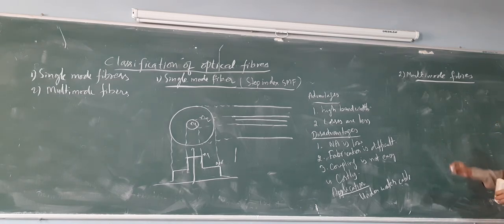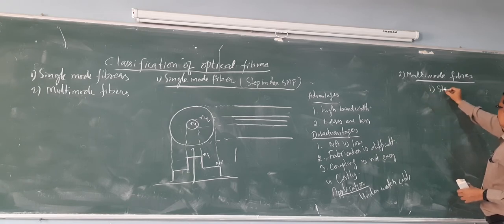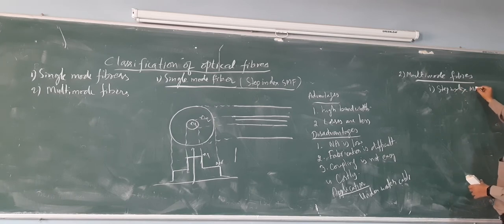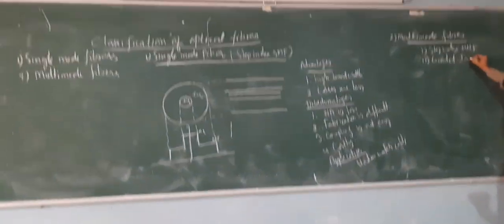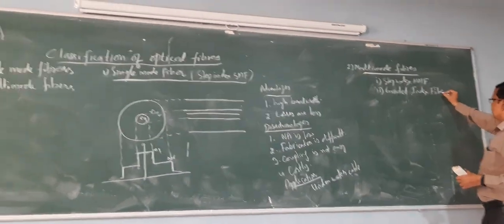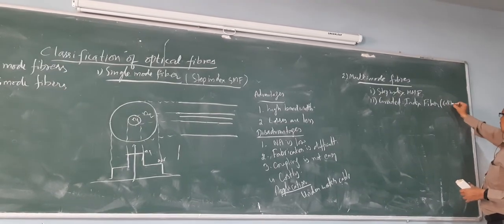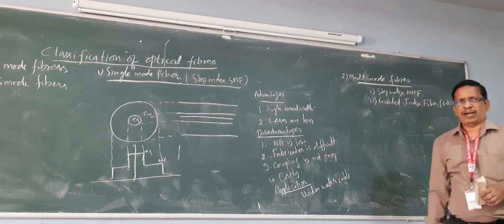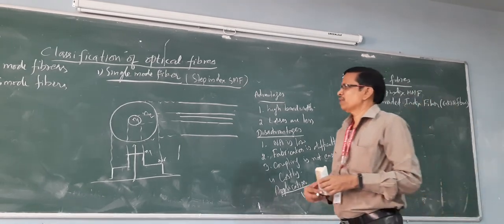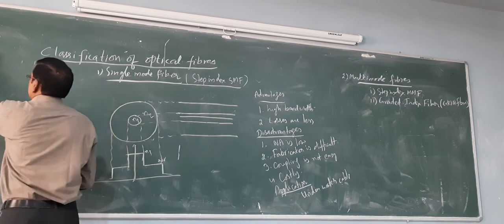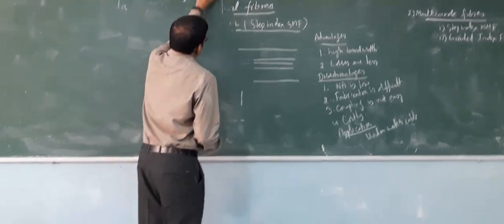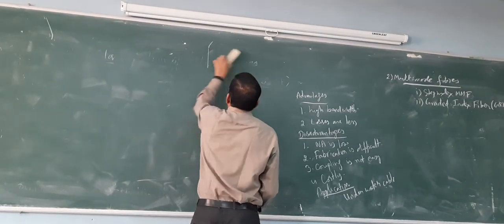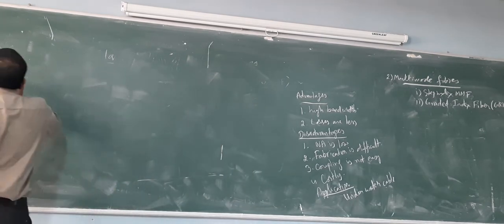Multi-mode fibers are further divided into step-index multi-mode fiber and graded index fiber. The graded index fiber is abbreviated as GRIN fiber. Now we will understand the difference, starting with the step-index multi-mode fiber.